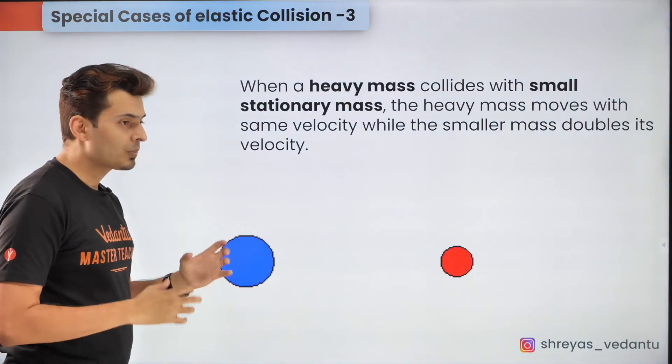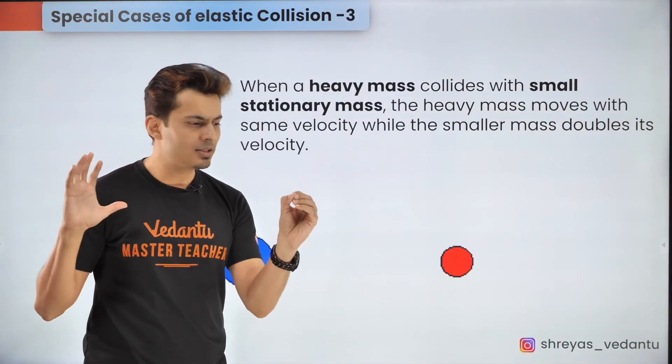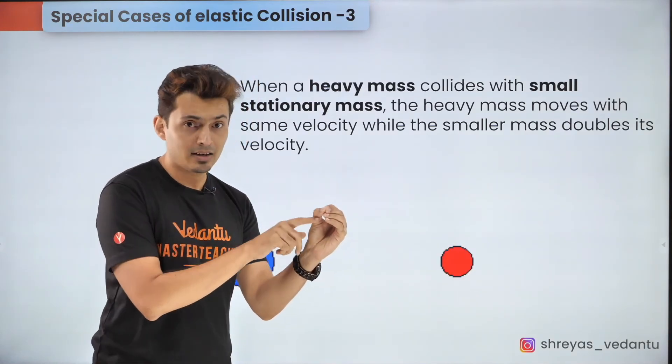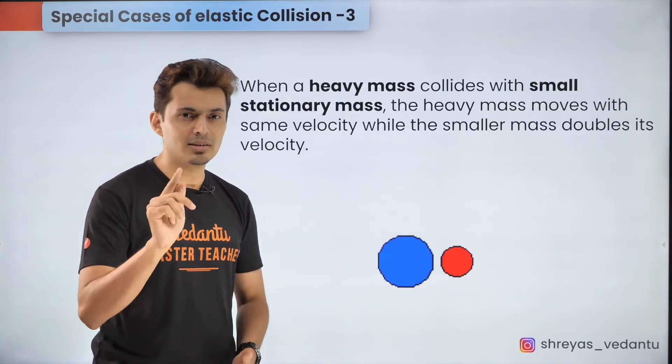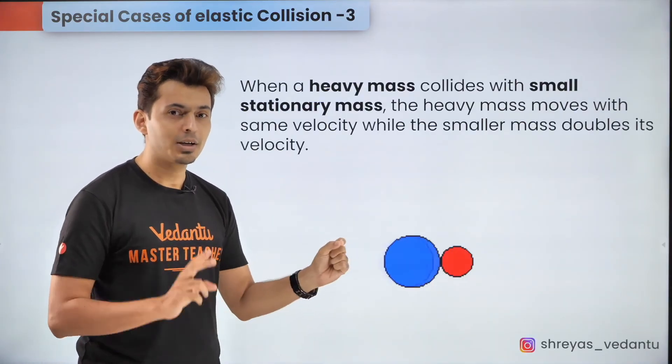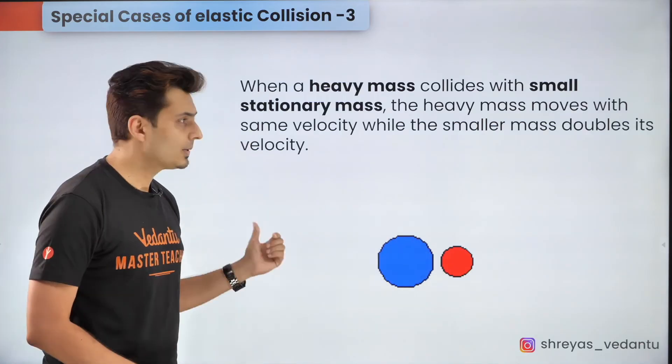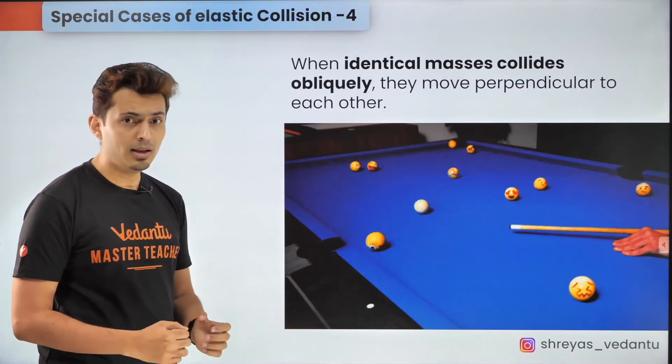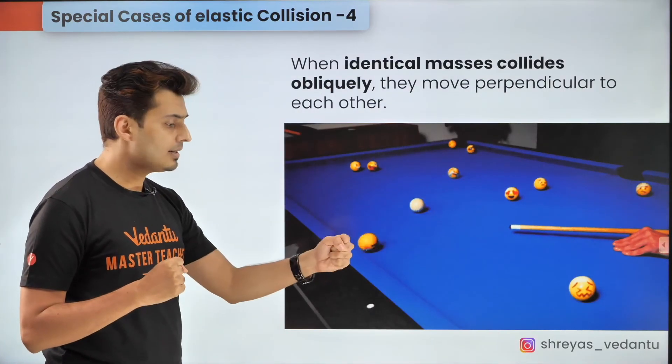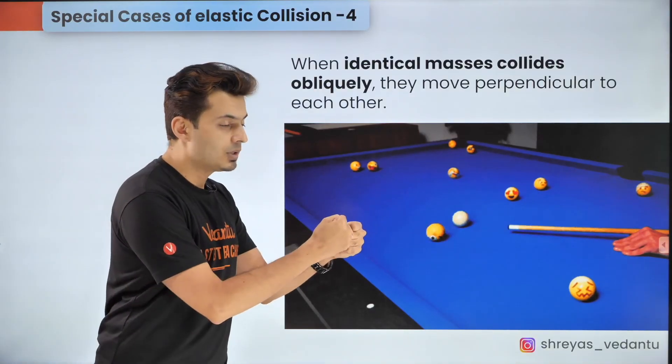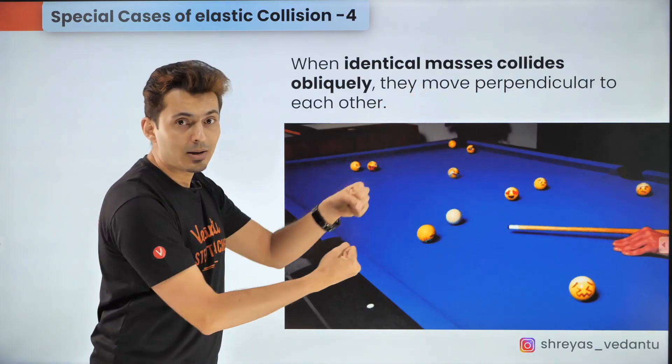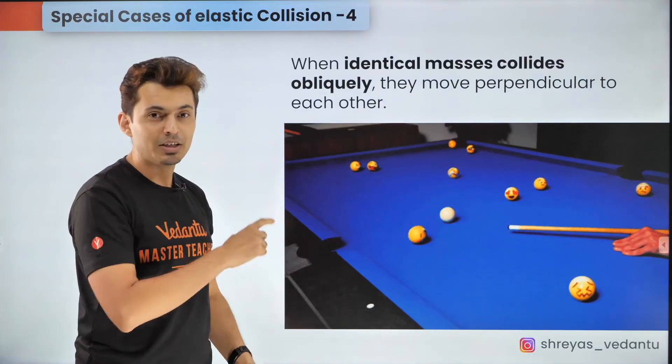And in the reverse scenario where a massive object collides with a very tiny object at rest after the collision you will see the massive object continues to move with the same speed whereas the tiny object moves with twice the speed. Now if you have a ball which collides with another identical ball at an angle but that should be at rest then after the collision both the bodies move in perpendicular directions to each other.